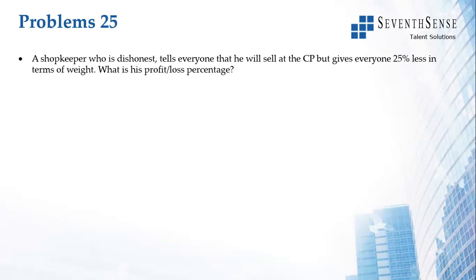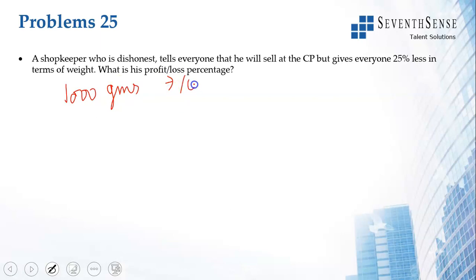In this problem, a shopkeeper who is dishonest tells everyone that he will sell at the cost price, but he gives everyone 25 percent less in terms of weight. What is his profit or loss percentage? For all shopkeeper-type problems where the weight is wrong, we assume that the cost price for 1000 grams is 1000 rupees. He is telling everyone he will sell at CP, so for 1000 grams it is 1000 rupees.